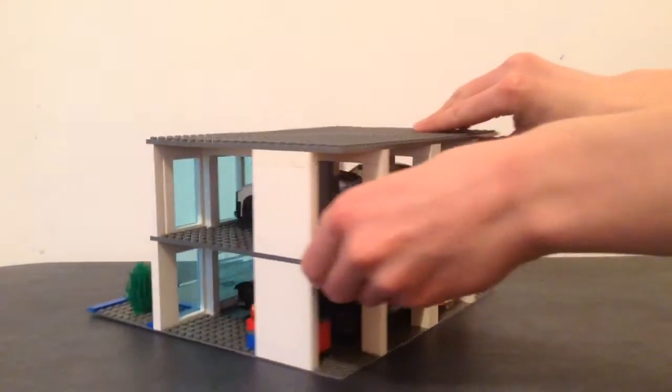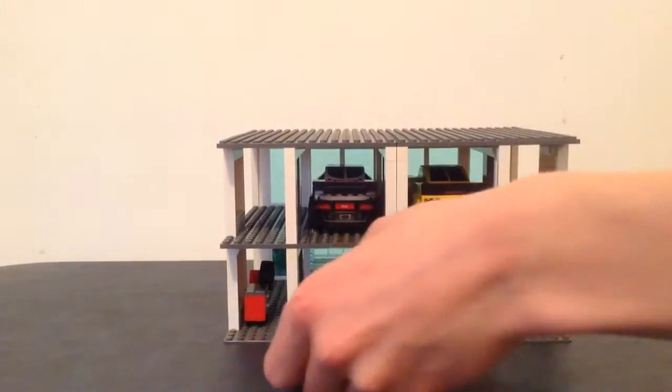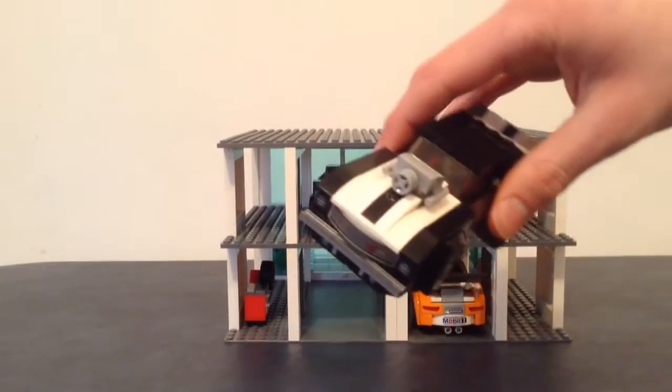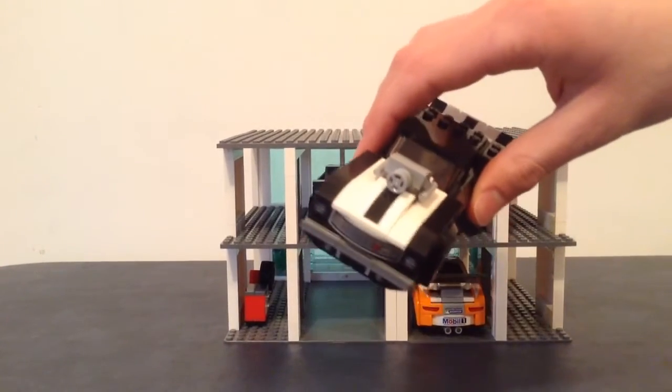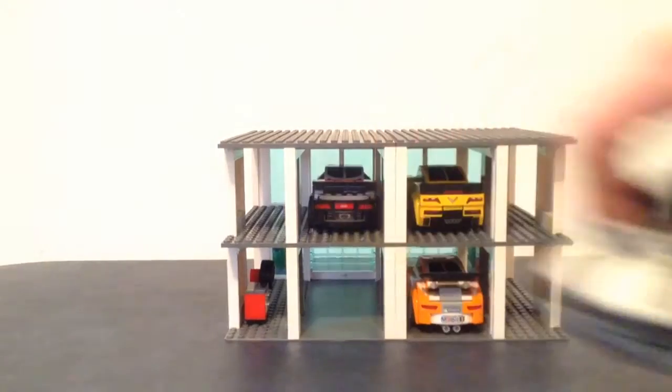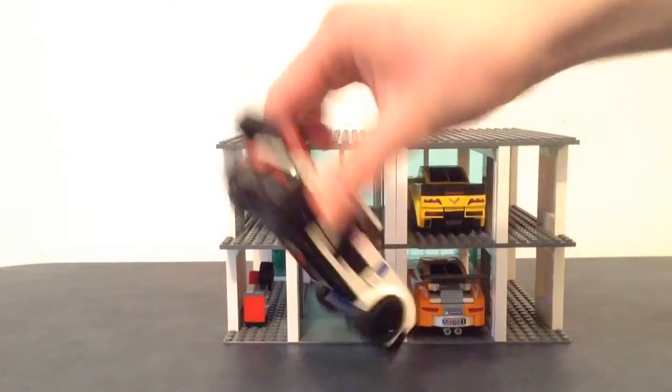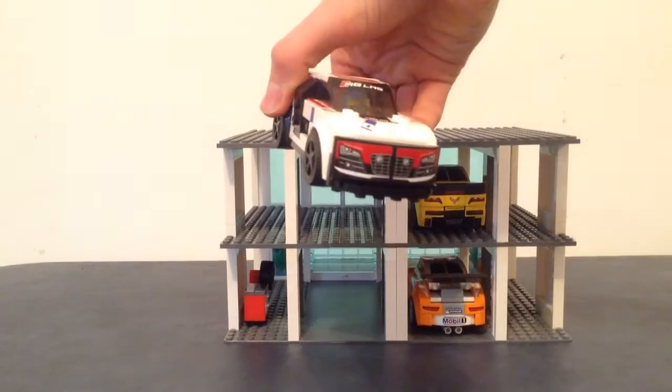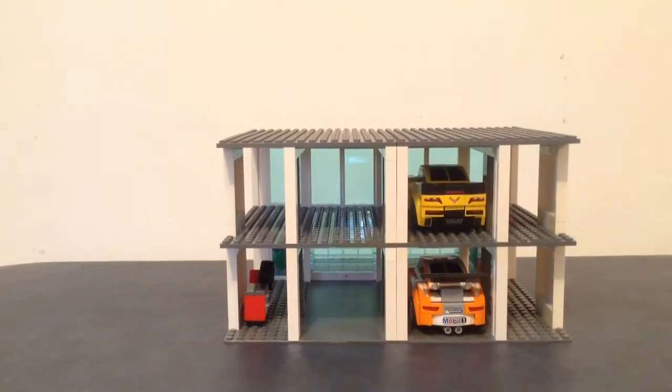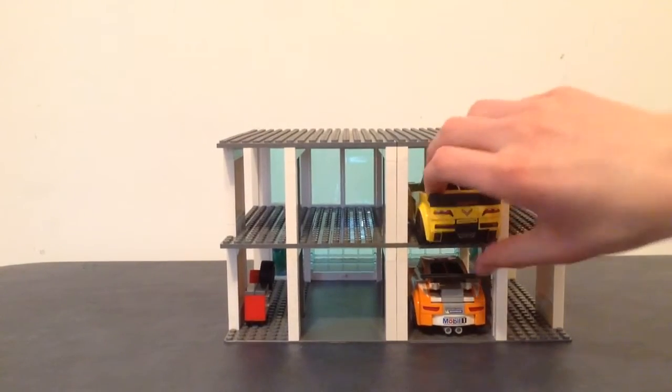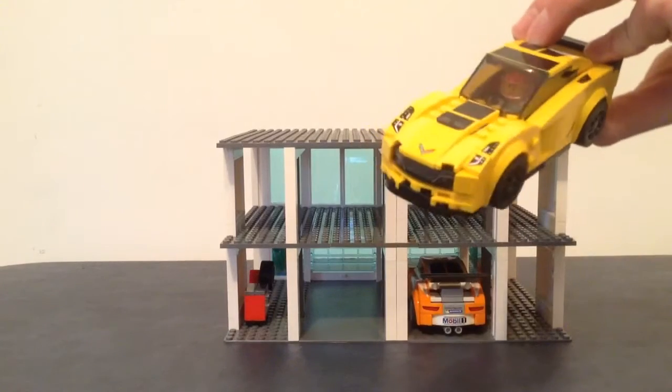I'll swivel it all the way around to the back so you can see all the cars: the Chevrolet Camaro from the Camaro drag race set, this is an Audi R8, it's a Chevrolet Corvette, and a Porsche 911.